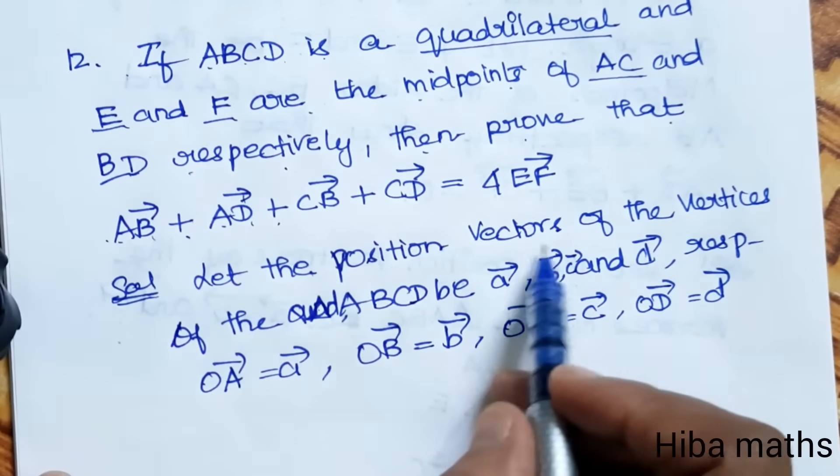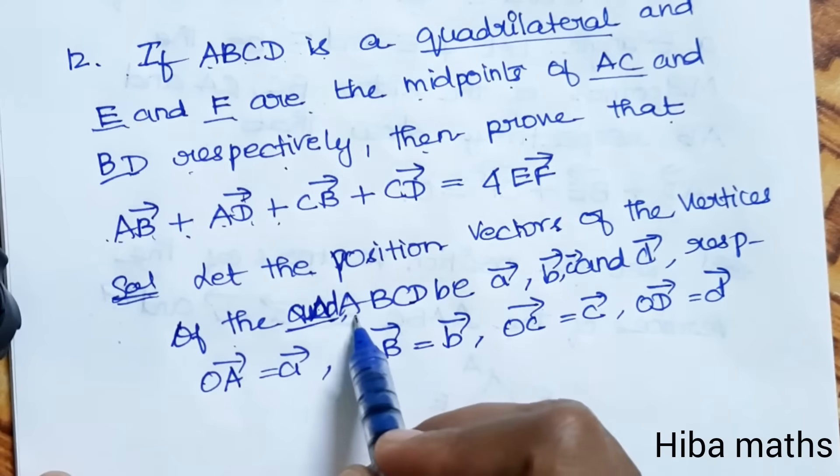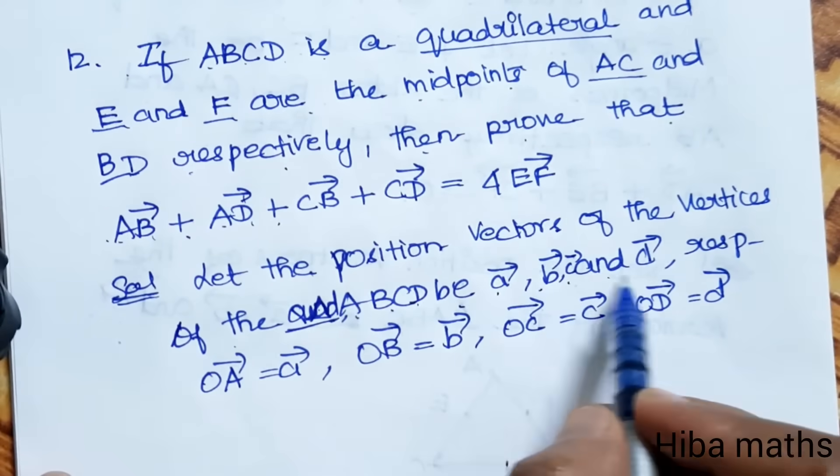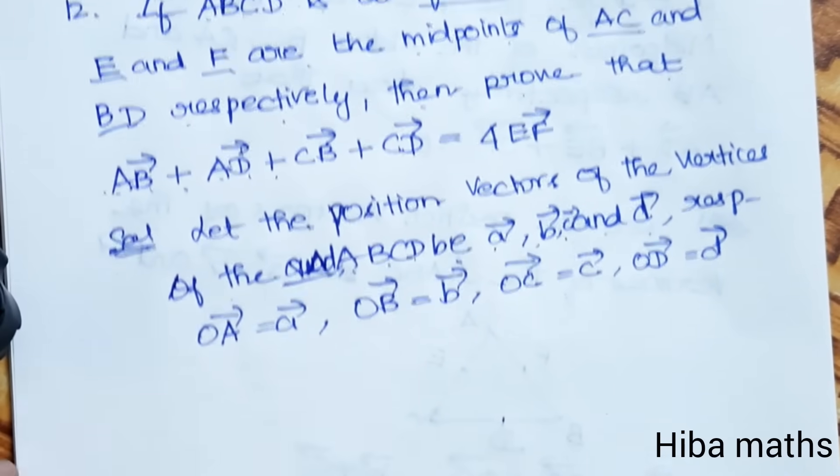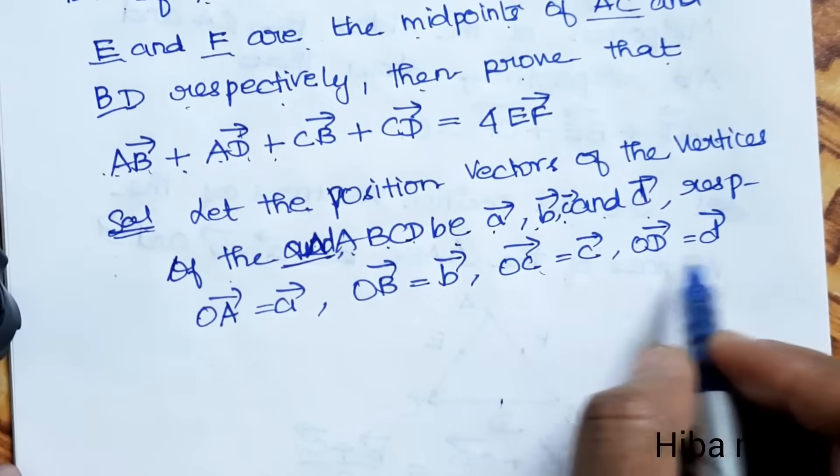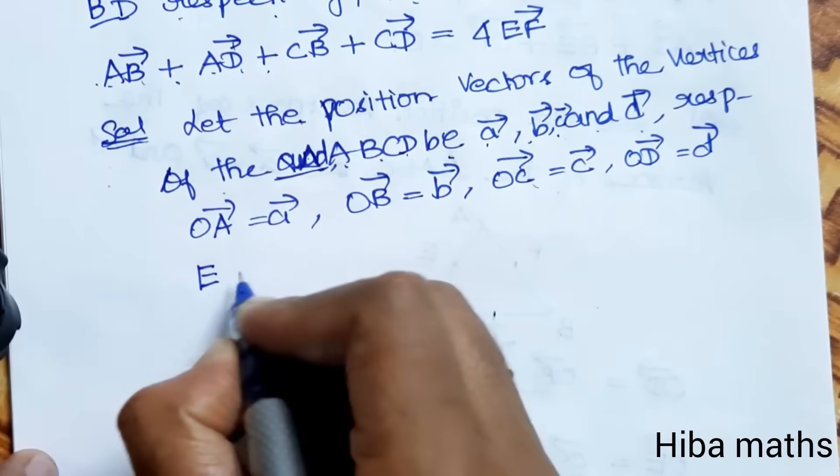Let the position vectors of the vertices of the quadrilateral A, B, C, D be A vector, B vector, C vector, and D vector respectively. So OA vector is A, OB is B, OC is C, OD is D. And E and F are the midpoints.